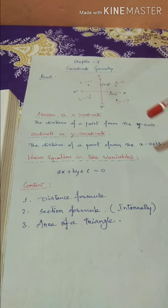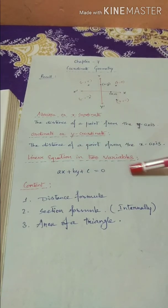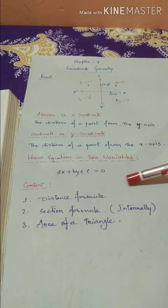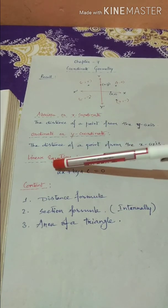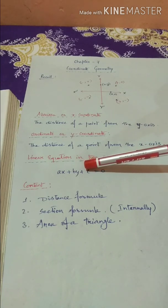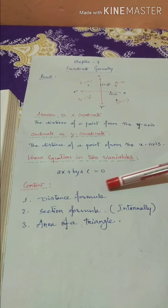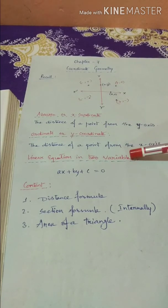We also recall the linear equation in two variables, which we studied in Class 9. The general equation of a line is ax + by + c = 0, where a, b, and c are constants. Remember that a and b are not equal to zero at the same time.